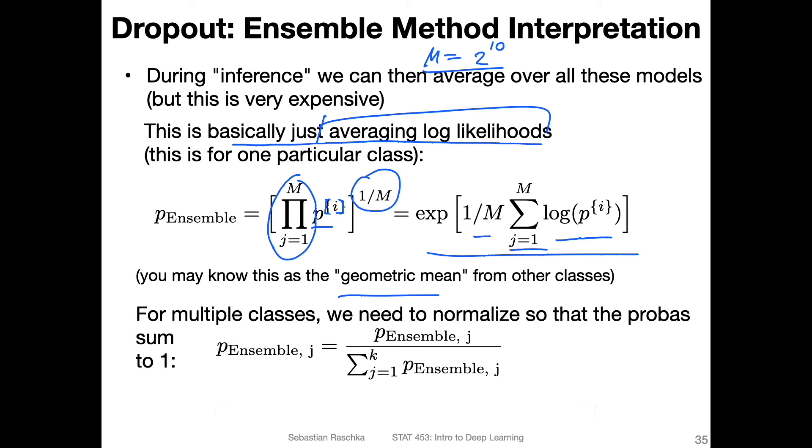And here I'm just adding the exponents. I was just considering the log of this here, and this one undoes it. So it's essentially the same computation. And here inside, you can think of it as averaging the log likelihoods. So essentially, what this is, we are computing the geometric mean. So that would be one way we can combine the predictions.